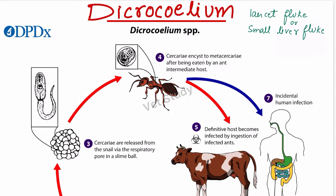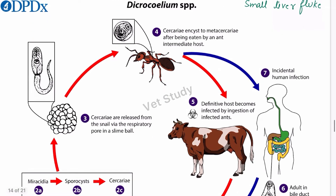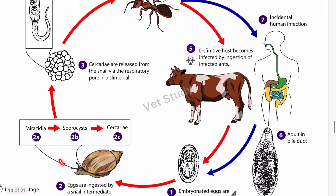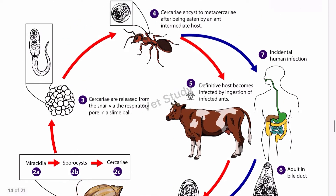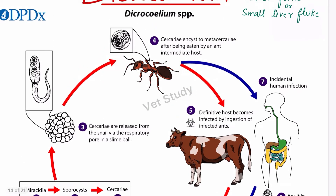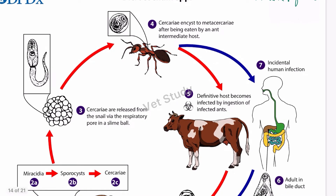Now we'll look at the life cycle. The definitive hosts are ruminants, dogs, pigs, and humans. There are two intermediate hosts in this case. The first intermediate host is the land snail, and the second intermediate host is the ant — Formica fusca, which is the scientific name of the ant. Transmission of infection occurs through ingestion of the ant, which carries the metacercaria. This can be transmitted to animals or humans, so this is zoonotic.